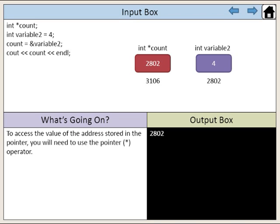To access the value of the address stored in the pointer, you will need to use the pointer operator. The pointer count points to the address of variable2, which is 2802.